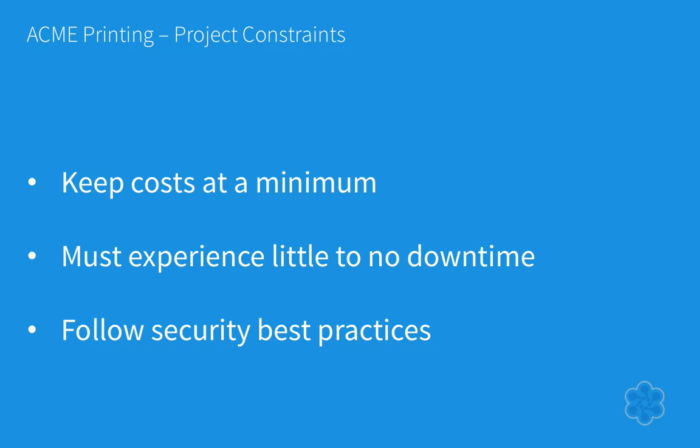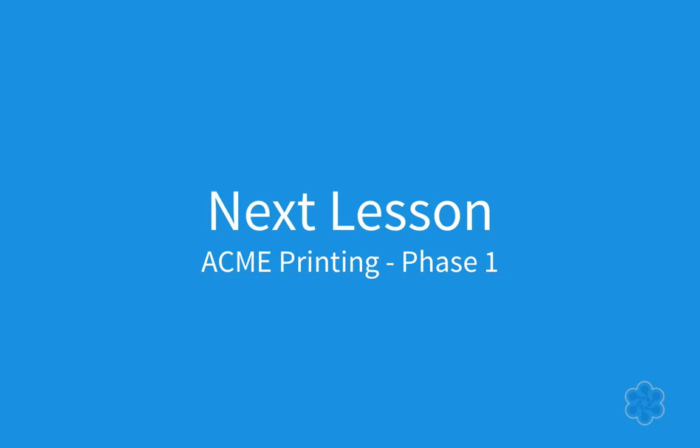Acme Printing does not want to run its own infrastructure, nor do they have the money to do so. They do not have an AWS account, but are willing to start one based on our recommendation. In the next three lessons, we are going to break down each phase into its own lesson. We will look at possible solutions and choose the best approach that is within the stated constraints. Up first, we will look at phase one of our Acme Printing solution.